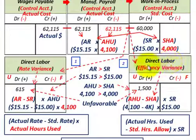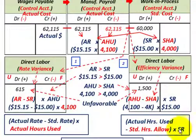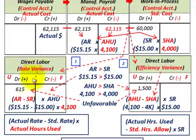To summarize the formulas: Direct labor efficiency variance = (Actual Hours Used − Standard Hours Allowed) × Standard Hourly Rate. Direct labor rate variance = (Actual Hourly Rate − Standard Hourly Rate) × Actual Hours Used.